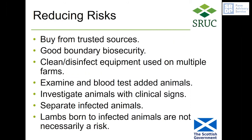So how can you reduce the risks from CLA? You can buy from trusted sources, and good boundary biosecurity will prevent nose-to-nose contact and straying sheep from other properties. If equipment is being used on multiple farms, it's important it's cleaned and disinfected between holdings. If you're buying animals, examine them, check them for lumps and bumps, and you can blood test them as well.